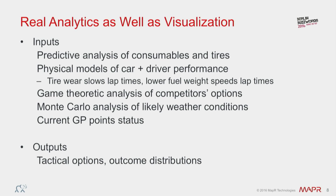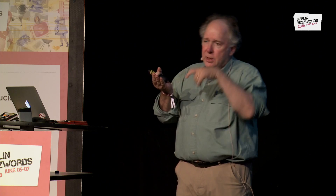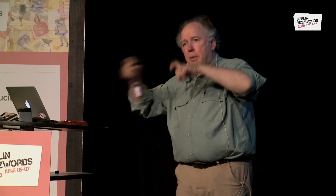Different drivers have different skills at different times. As the tires wear down, the car gets slower. As the gas becomes lighter, the car gets faster. They also do game theoretic alternatives — when they pit stop against when the other people take pit stops, putting new tires on, new fuel, makes the car faster or slower against the other people in the race. There are very few overtakings except for pit stops. And then they do Monte Carlo analysis against possible weather during the 90-minute race.